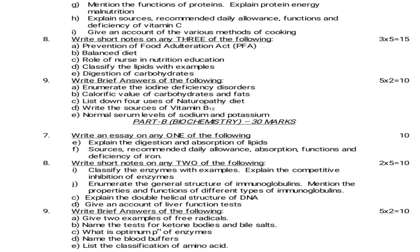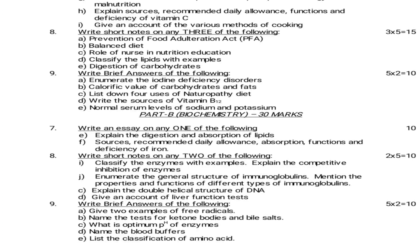Next, Biochemistry essay questions — out of 2, answer any one. Explain the digestion and absorption of lipids. Sources, recommendations, daily allowances, absorption, functions and deficiency of iron. Short notes: Classify the enzyme with examples. Explain competitive inhibition of enzyme. Enumerate the general structure of immunoglobins. Mention the properties and functions of different types of immunoglobins. Explain the double helical structure of DNA. Give an account of liver function tests. For 2 marks questions: Give 2 examples of free radicals. Name the tests for ketone bodies and bile salts. What is optimum pH of enzymes? Name blood buffers. List the classification of amino acids.